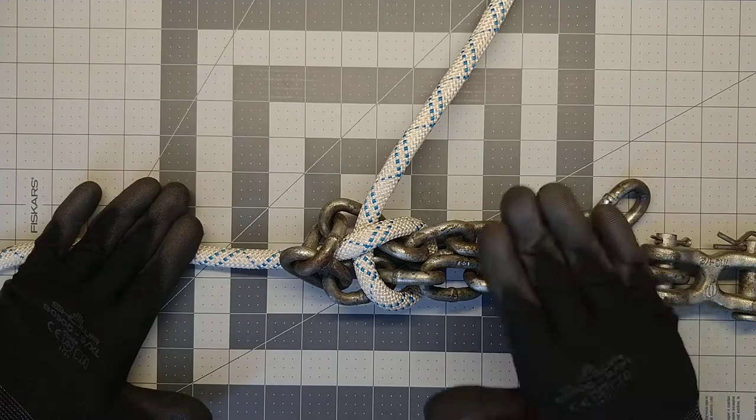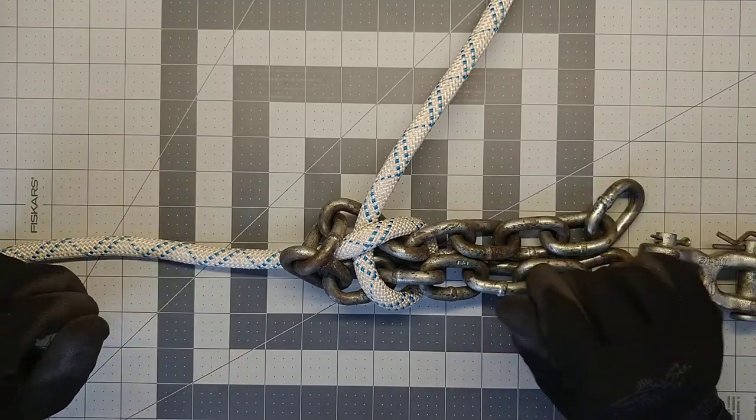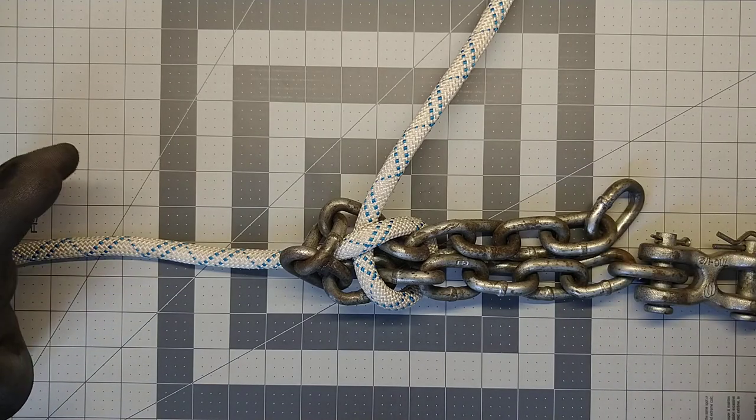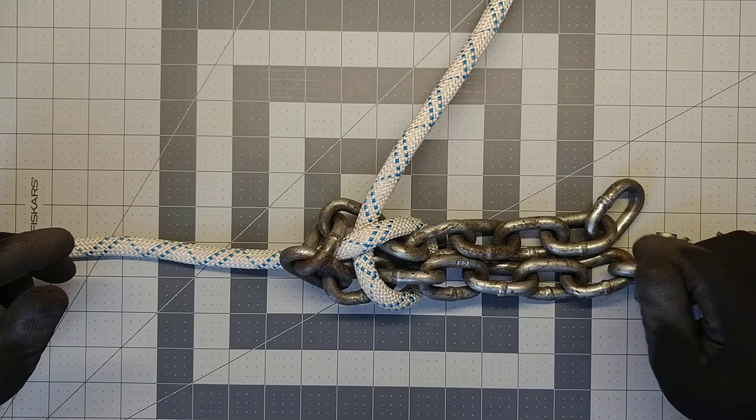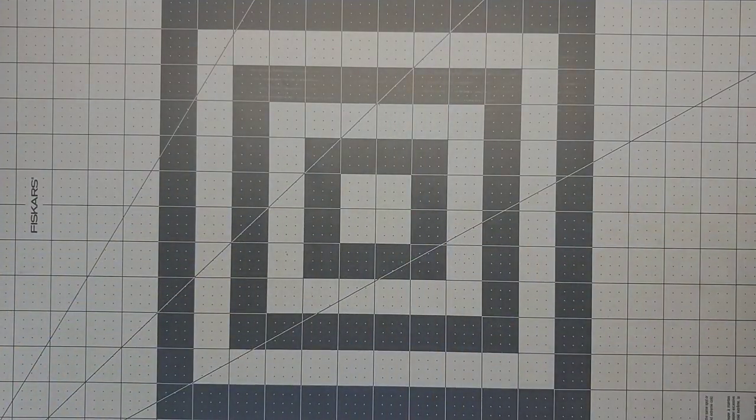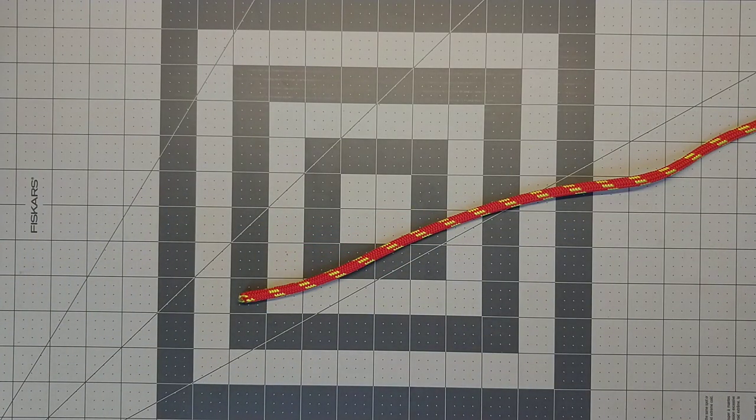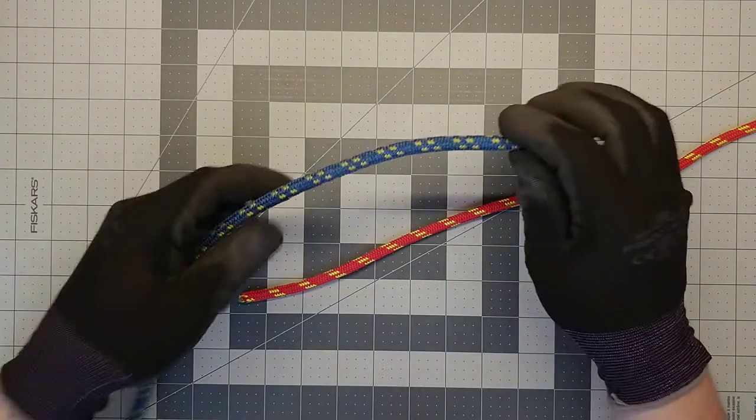Using rope to a chain. Again, that's a becket bend or a sheet bend—they're the same thing. There is another neat way to tie the becket bend, very similar to how we tie a snap bowline.